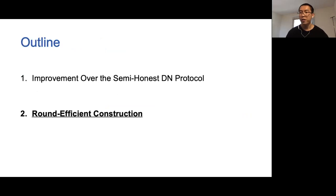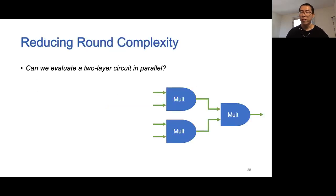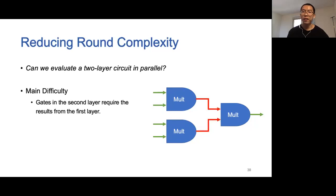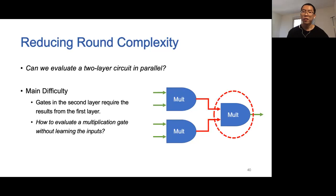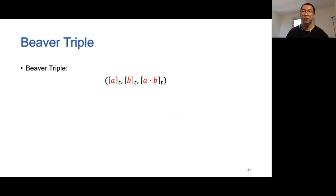Now let's see how to reduce the round complexity without affecting the concrete efficiency. Can we evaluate a two-layer circuit in parallel? If we can answer this question affirmatively, then we can evaluate the whole circuit two layers at a time, and reduce the round complexity by a factor of two. Clearly, the main difficulty is that gates in the second layer require the results from the first layer. For a multiplication gate in the second layer, how should we evaluate this gate without learning the inputs?